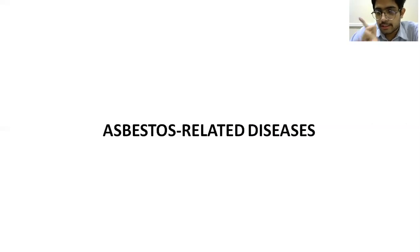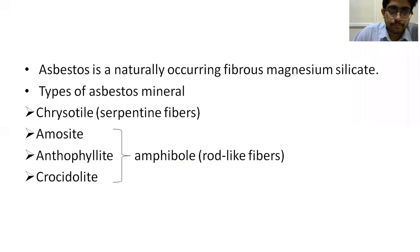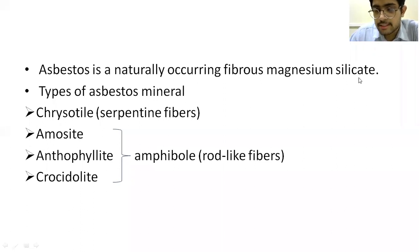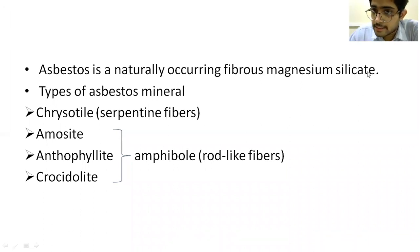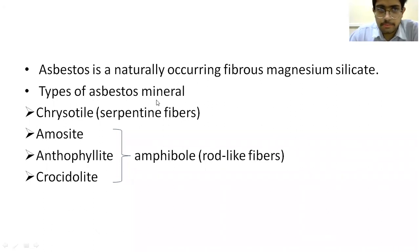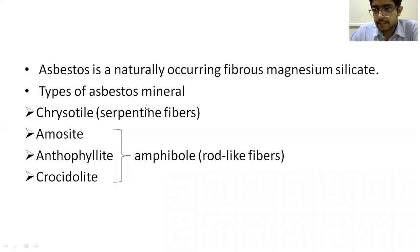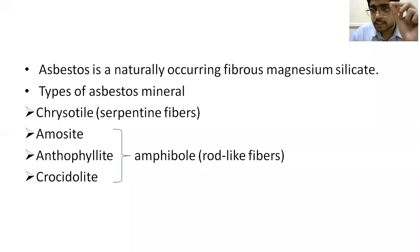Coming to the first disorder under pneumoconiosis — asbestos-related diseases. Asbestos is naturally occurring fibrous magnesium silicate. Silica is silicon dioxide; when mixed with another mineral like magnesium, it is called a silicate. There are two major types of asbestos mineral: chrysotile and amphibole. Amphibole includes amosite, anthophyllite, and crocidolite. Chrysotile is a slender, spiral fiber called a serpentine fiber. Amphibole is a rod-like fiber, and amphibole is more dangerous compared to chrysotile.